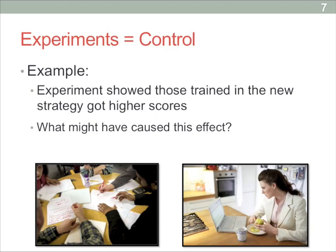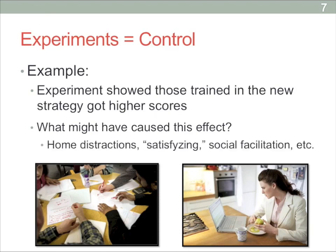For one thing, since the participants in the control group are at home, there could be distractions. There could also be what we call satisficing — participants aren't really taking the experiment seriously and are just putting forward what little effort they need to get by. This is very common, especially in home experiments. If you have them come into the lab, people usually take it more seriously. Also, there could be social facilitation effects — when people are surrounded by others, like in the experimental condition, they might perform better because they want to prove themselves. So there are too many things differing between the two groups to really say it's the test-taking strategy causing differences in test scores.